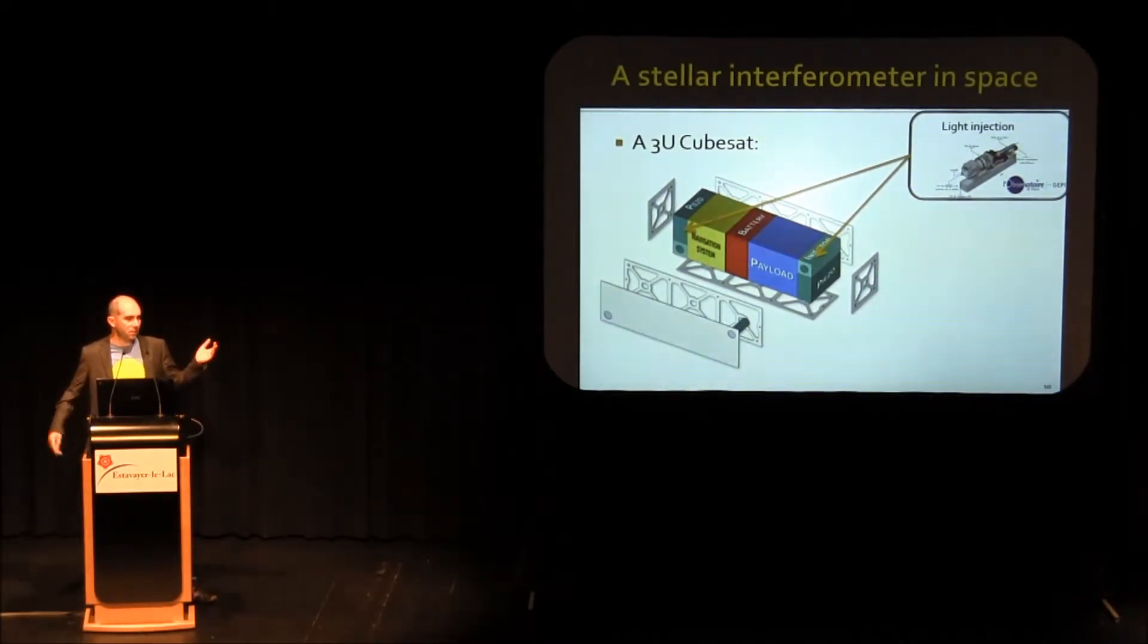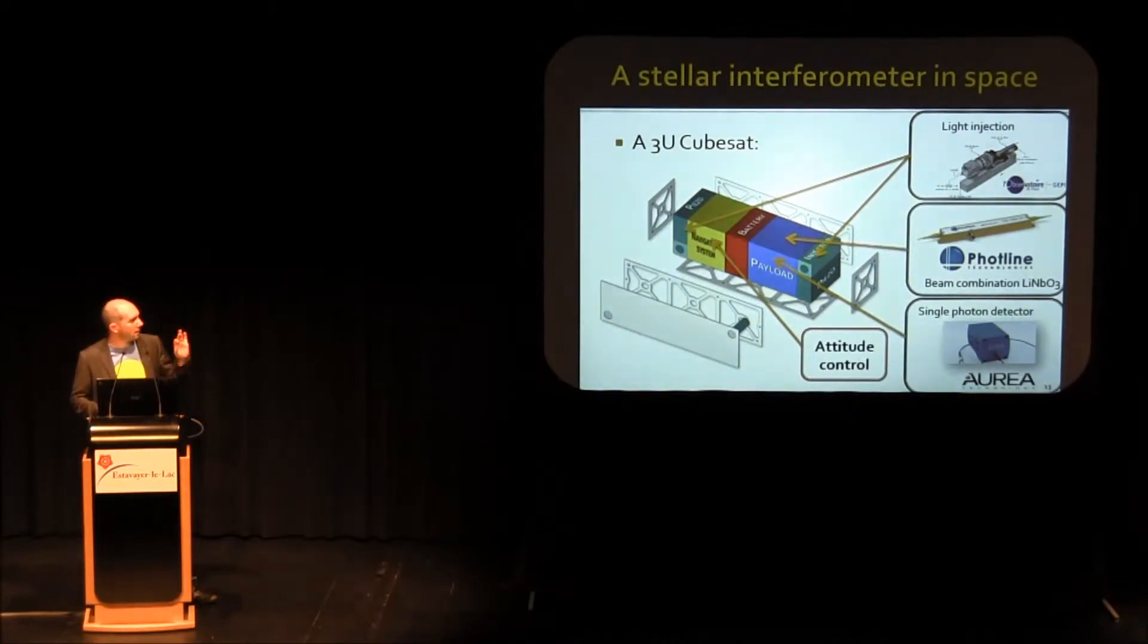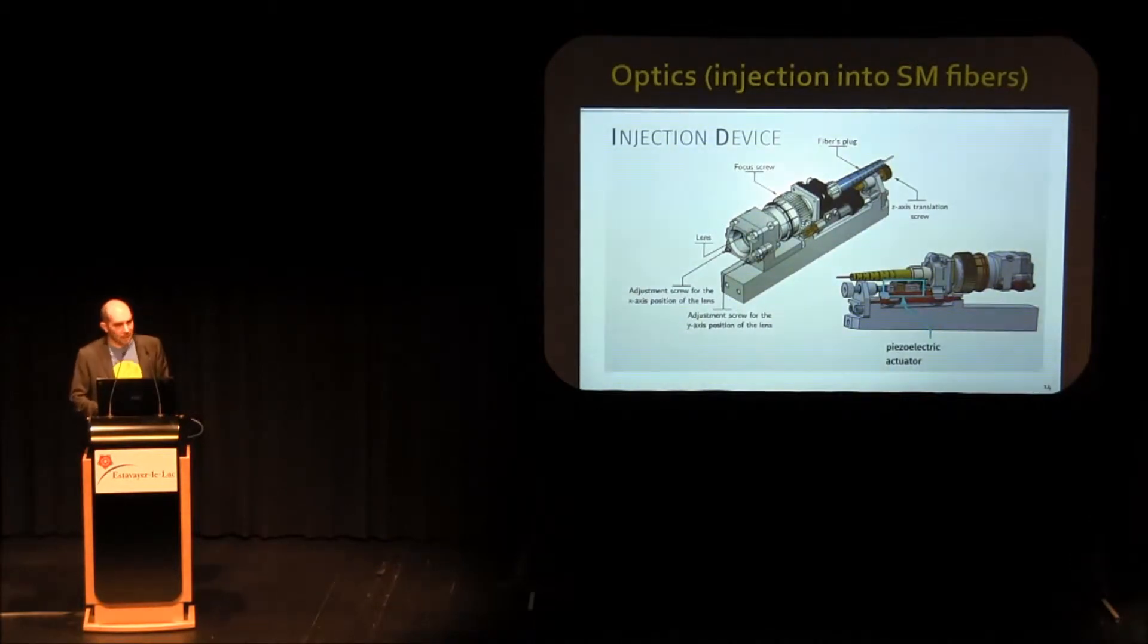If we go into the technique to show how we could make such an interferometer into a small device, the different elements you will have to fit into your 3U CubeSat is first a way to inject the light into single-mode fiber, then a way to combine the light to do the nulling interferometry, then a way to detect the photons from the zodiacal dust, and then the last point, which is a critical issue, is the attitude control. How to inject the light from the stellar object into a fiber? We are already doing that from the ground. It's quite complicated because the single-mode fiber is very small, but that's something which is doable and which is done already on the ground, so we would have to adapt that to a spacecraft.